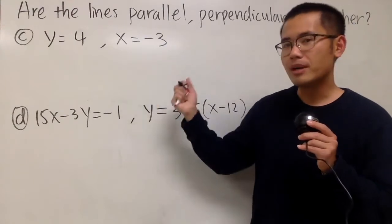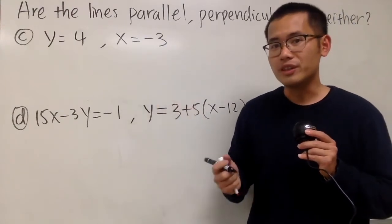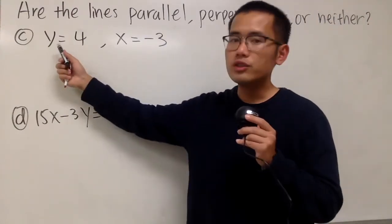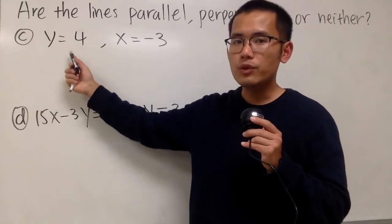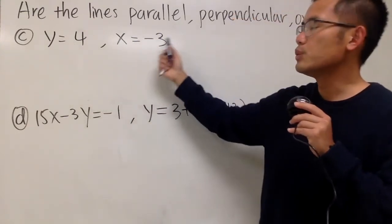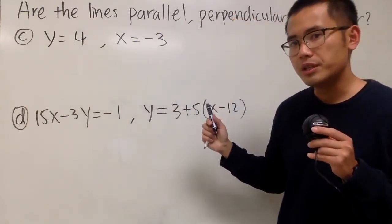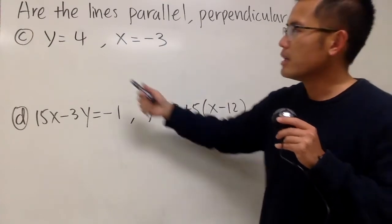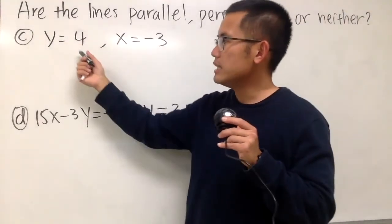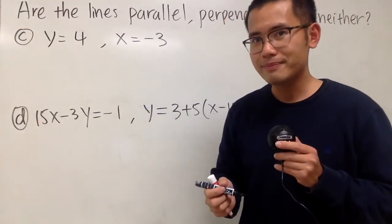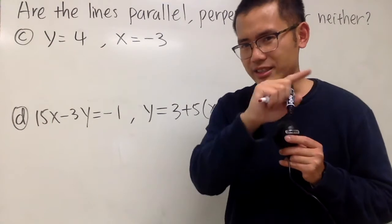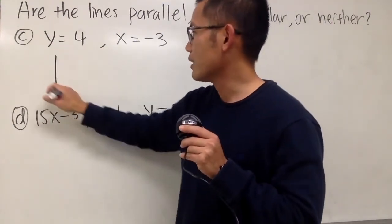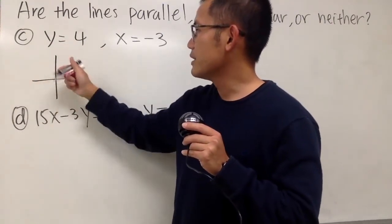We are going to see if the lines are parallel, perpendicular, or neither. This is the first one. We have the equations y is equal to 4, and the other one is x is equal to negative 3. These are the special cases. When we have y is equal to 4, the line is horizontal.